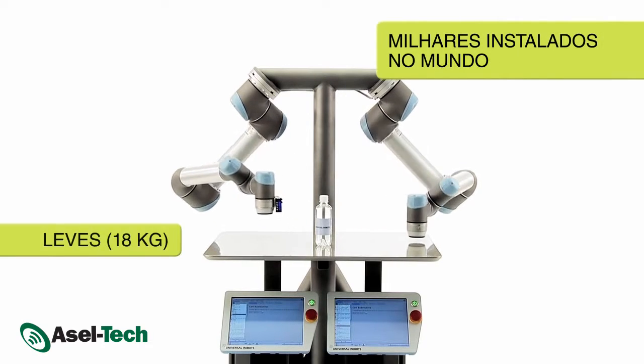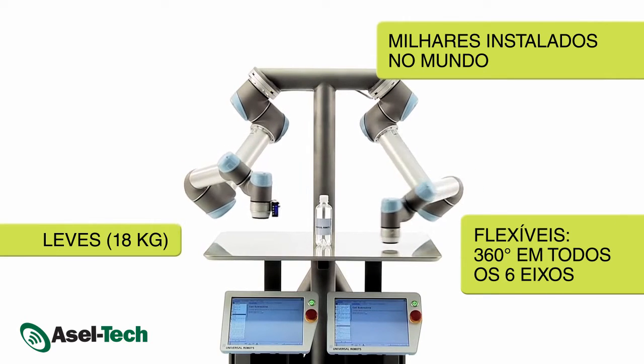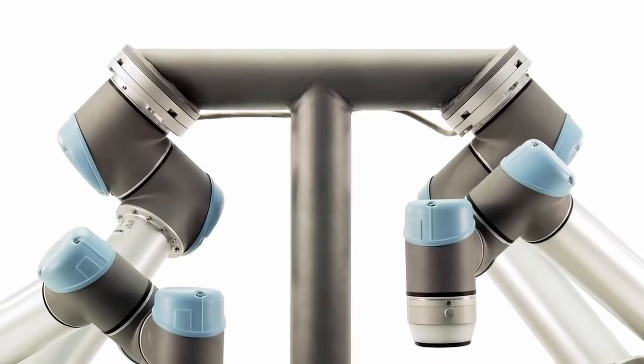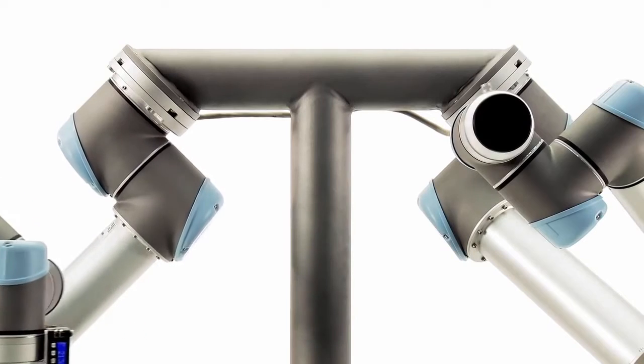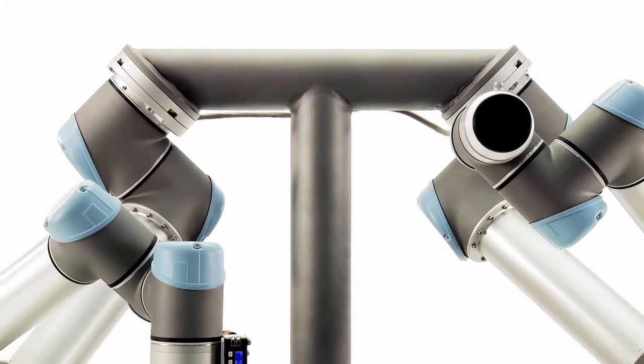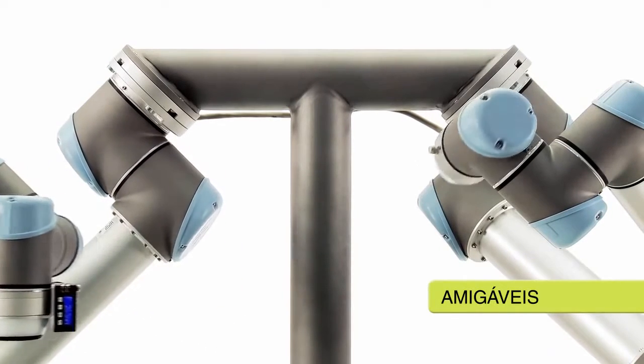Universal Robots has reinvented industrial robotics with lightweight flexible robot arms. Tasks previously thought impossible to automate due to cost and complexity are now achievable with the user-friendly robots.